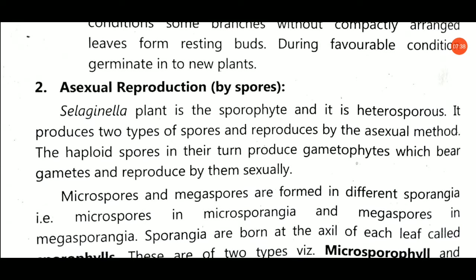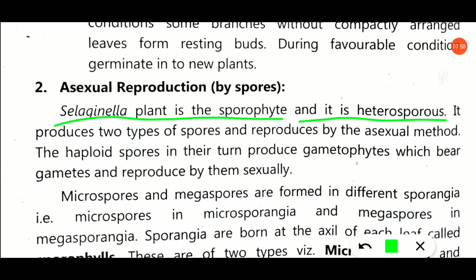In sexual reproduction of Selaginella, the Selaginella plant is the sporophyte, visible to the naked eye. Selaginella is heterosporous because it forms two types of spores: microspores and megaspores. Microspores and megaspores are haploid in nature because they form due to the process of meiosis from sporophytic mother cells. The haploid spores in turn produce gametophyte.